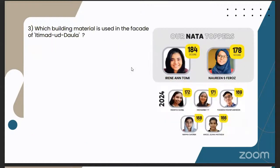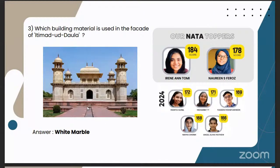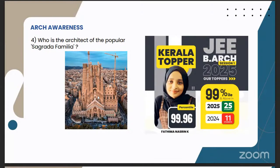Which building material is used in the facade of Itmad-ud-Daulah? That was a moderate level question because Itmad-ud-Daulah is a popular Mughal monument situated in Agra. The main material used in the facade is white marble. There is also red sandstone, but in the facade you can see intricate works of white marble. And the next question: who is the architect of the popular Sagrada Familia? Sagrada Familia is one of the most important monuments in the world — it's in Barcelona, Spain. It was designed by architect Antonio Gaudí. That is also an easy question as Gaudí is on the list of important architects in the world.